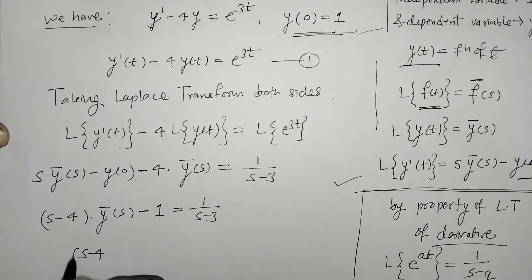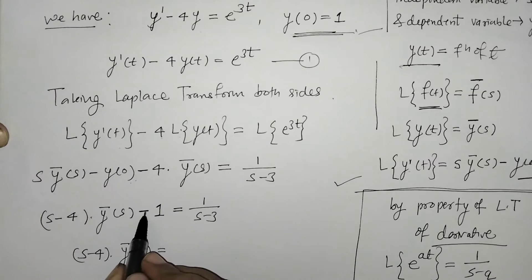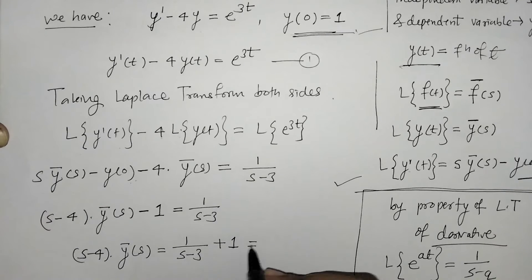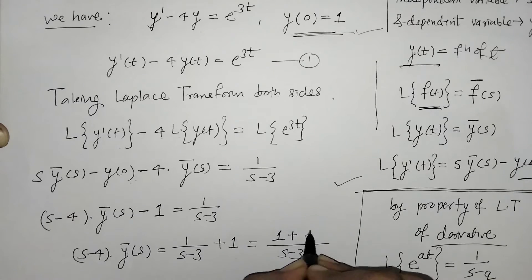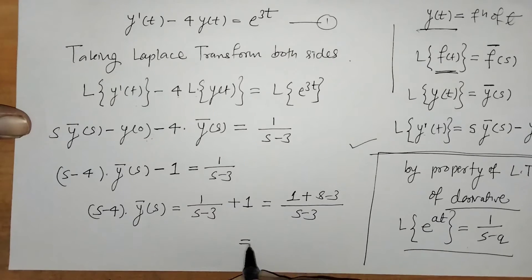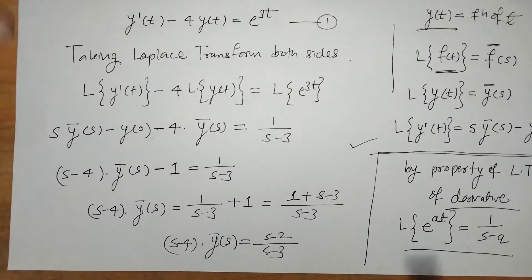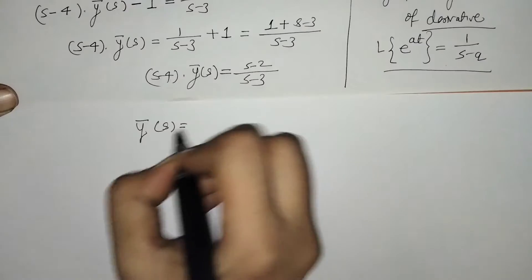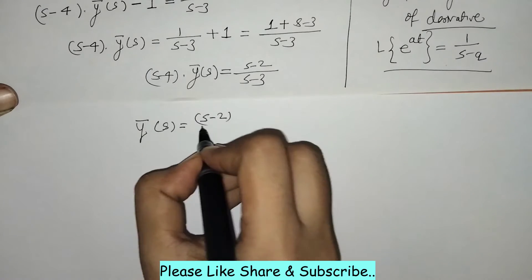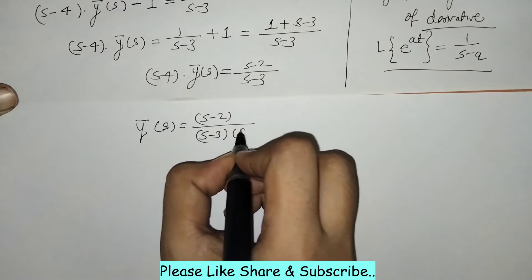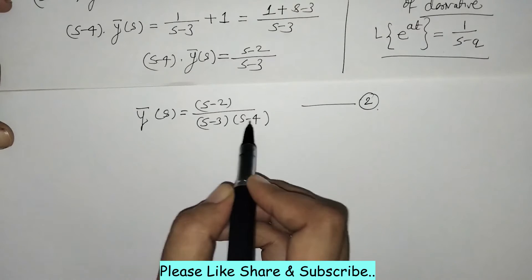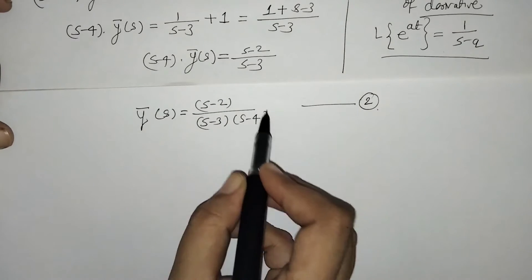Now simplifying: we take y-bar(s) common, giving (s minus 4)·y-bar(s). We shift the minus 1 to the right side, so we have 1 upon (s minus 3) plus 1. On simplification this becomes (s minus 3 + 1) over (s minus 3), which gives (s minus 2) upon (s minus 3) on one side and (s minus 4)·y-bar(s) on the other. So y-bar(s) equals (s minus 2) upon (s minus 3)(s minus 4). This is our Laplace transform function in variable s.